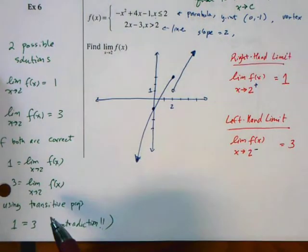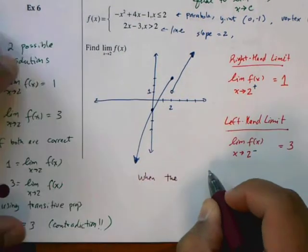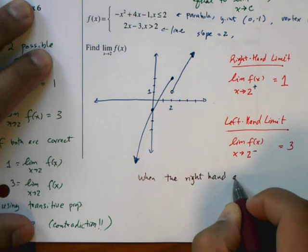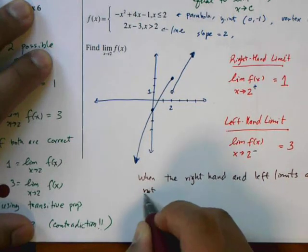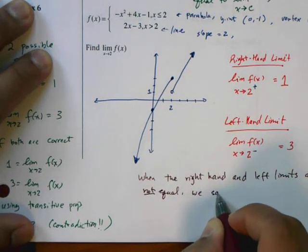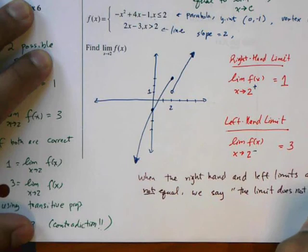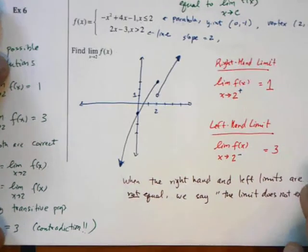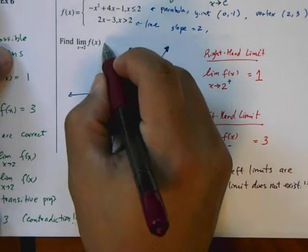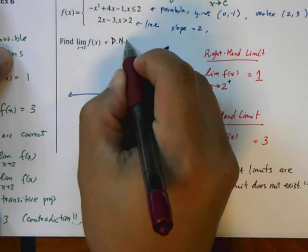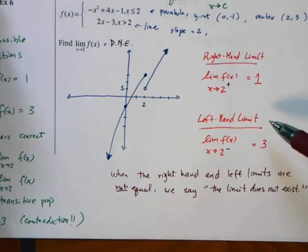So we can say that when the right-hand and left-hand limits are not equal, we say the limit does not exist. So the answer to this question is DNE. The right-hand limit exists, the left-hand limit exists, but they're both conflicting with each other. Therefore, it does not exist.